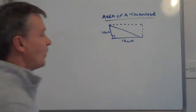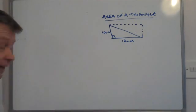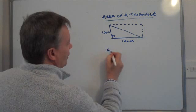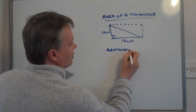To work out the area of a rectangle, you multiply the base by the height. So the area of this rectangle is 120 centimeters squared.